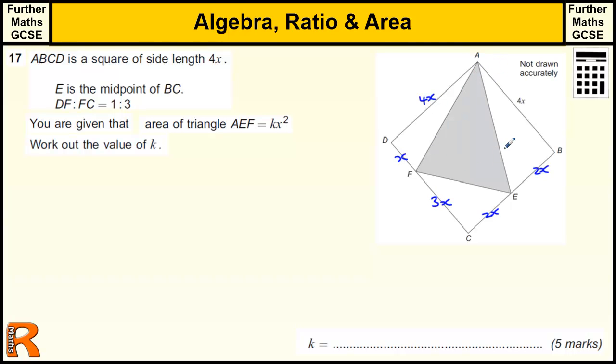Now, we're given that the area of the triangle AEF, so this bit, is kx squared, and we want to find this value of k.